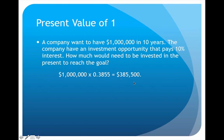Using the present value of one table, the factor is 0.3855. Multiplying that by one million dollars gives us $385,500. That means if a company invests $385,500 today in a 10% investment, after ten years they will have one million dollars. It's a simple calculation as long as you have the table and know the right number to look up.